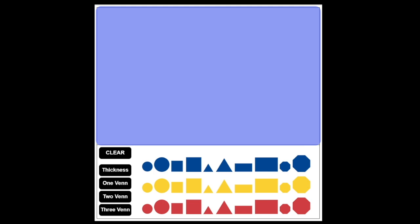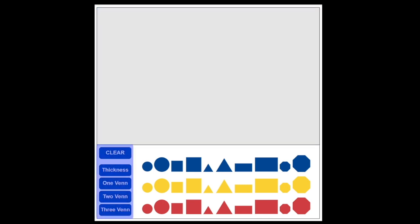The blank upper stage is where we will move our shapes to perform comparisons on one of the selections of Venn Diagrams. Finally, on the bottom left corner of the screen, we have five buttons for interacting with the application: Clear, Thickness, 1, 2, and 3 Venn.